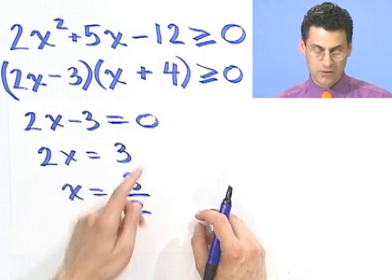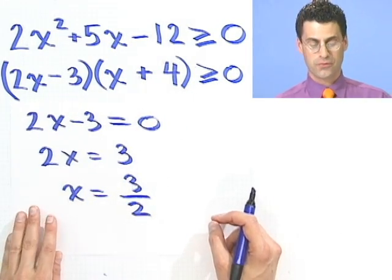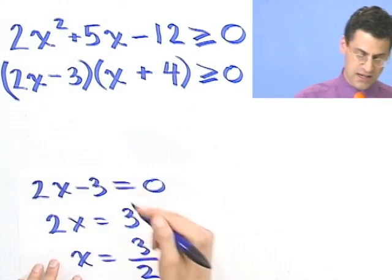Okay. When is this 0? Well, that's easy to see. That's going to be 0 when x equals negative 4. So if I make a sign chart, I'll just mark down these points here.